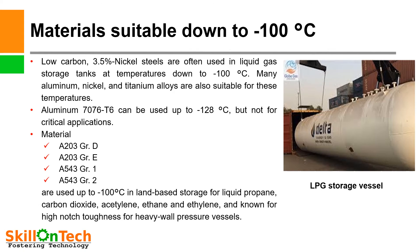Materials suitable down to –100°C. A picture of an LPG storage vessel is shown. Low carbon 3.5% nickel steel is often used in liquid gas storage tanks at temperatures down to –100°C. Many aluminium, nickel, and titanium alloys are also suitable for these temperatures. Aluminium 7076-T6 can be used up to –128°C, but not for critical applications. Materials such as A203 grade D, A203 grade E, A543 grade 1, and A543 grade 2 are used up to –100°C.